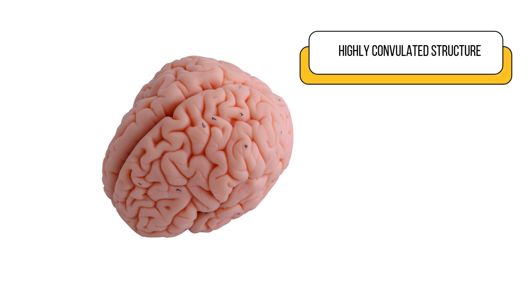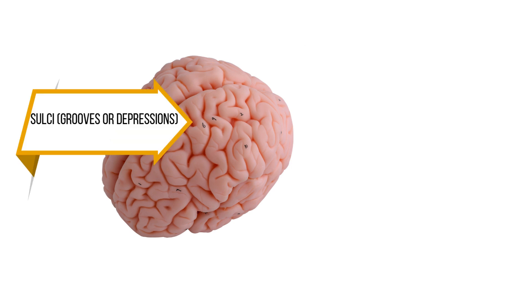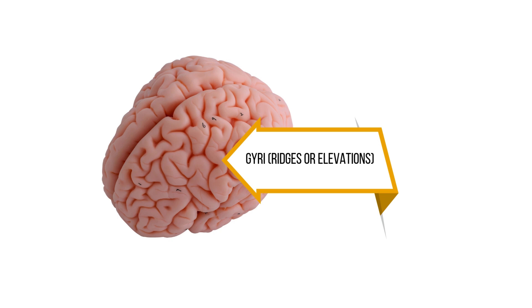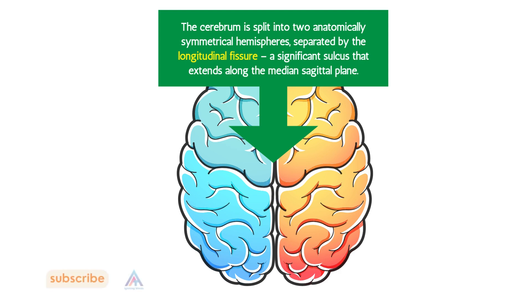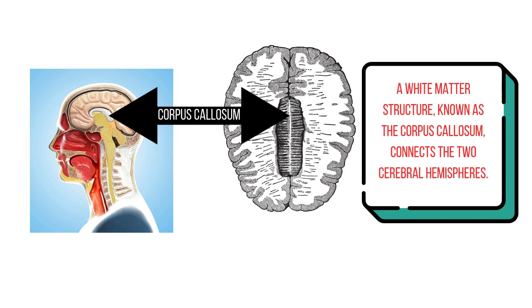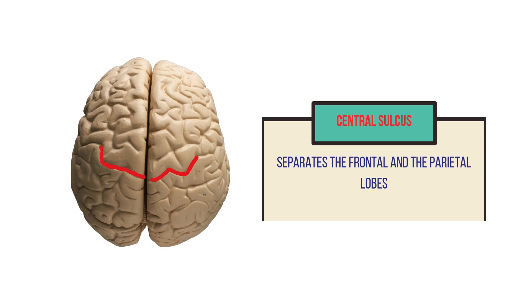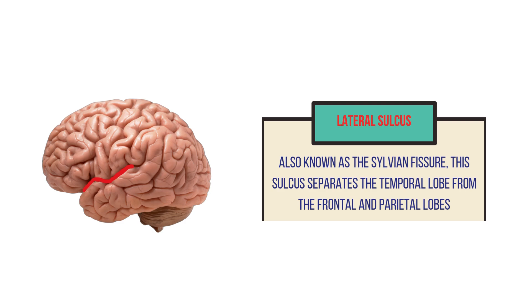Let us now discuss the external structure of the cerebrum. It is a highly convoluted structure characterized by sulci, grooves or depressions, and gyri, ridges or elevations. The cerebrum is divided into two symmetrical hemispheres separated by the longitudinal fissure, a prominent sulcus that runs along the median sagittal plane. The corpus callosum is a white matter structure that connects the two cerebral hemispheres. The central sulcus separates the frontal and the parietal lobes. The lateral sulcus, also known as the Sylvian fissure, separates the temporal lobe from the frontal and parietal lobes.